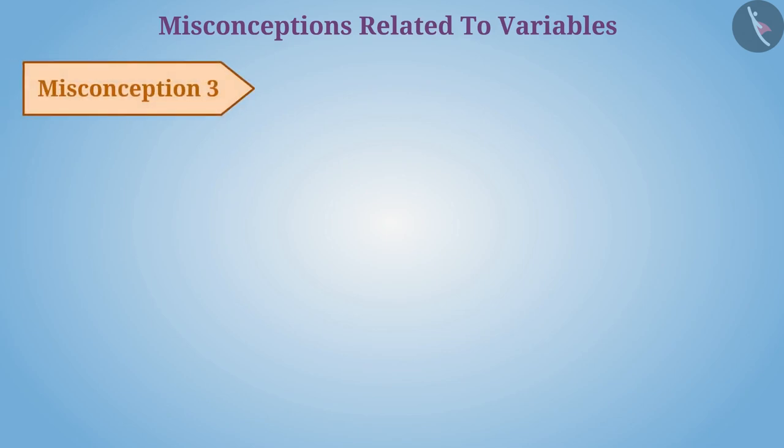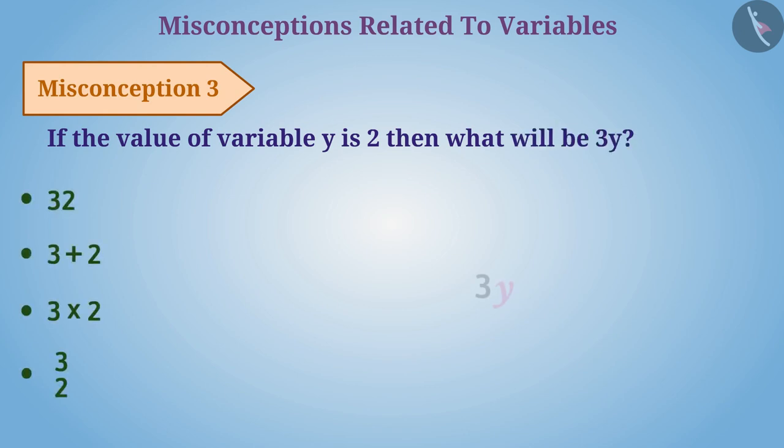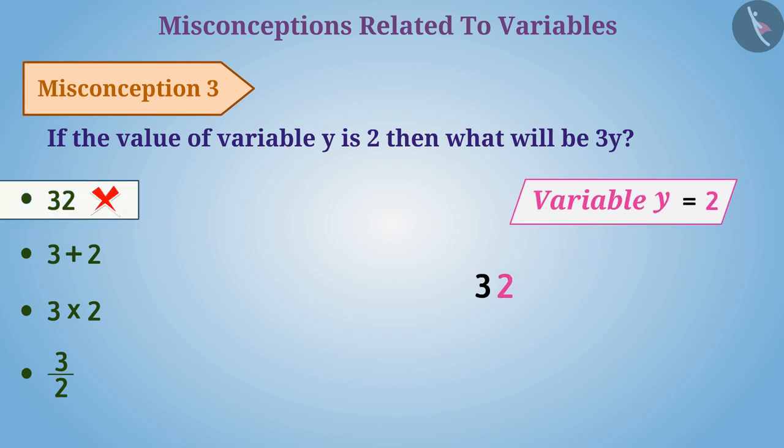Misconception 3: If the value of variable y is 2, then what will be 3y? Many times the variable is replaced with its value. Because of this understanding, 32 as an answer is given, which is a wrong answer.